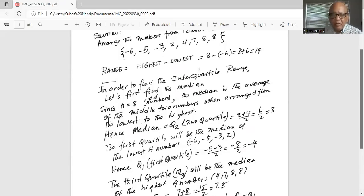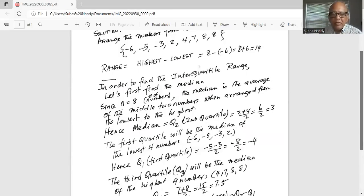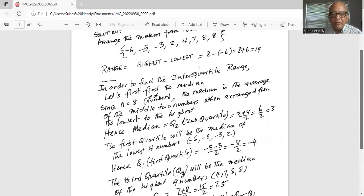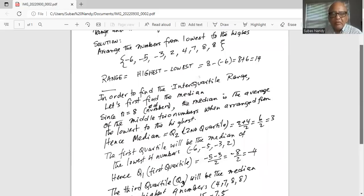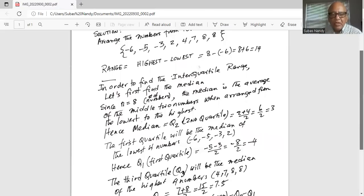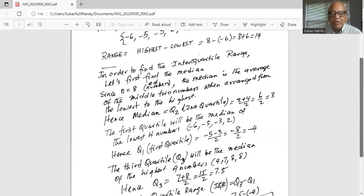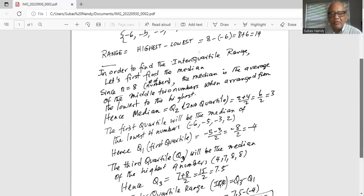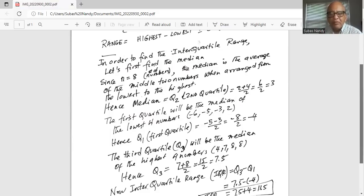And third quartile will be the median of the four highest numbers. And these are 4, 7, 8, 8. So we are looking for the median of this set of four numbers, which will be the average of the two central numbers, in this case 7 and 8. So third quartile is 7 plus 8 divided by 2 is 15 divided by 2 is 7.5.